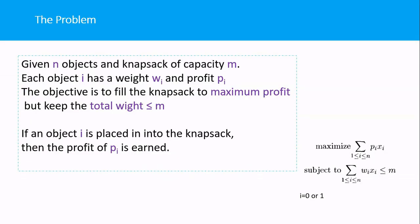The 0/1 Knapsack problem: you are given n objects and a knapsack of capacity m. Each object has a weight wi and a profit pi associated with it. Our objective is to fill the knapsack to maximum profit while keeping the total weight less than or equal to m. This problem is similar to the fractional knapsack problem, but with a key difference.